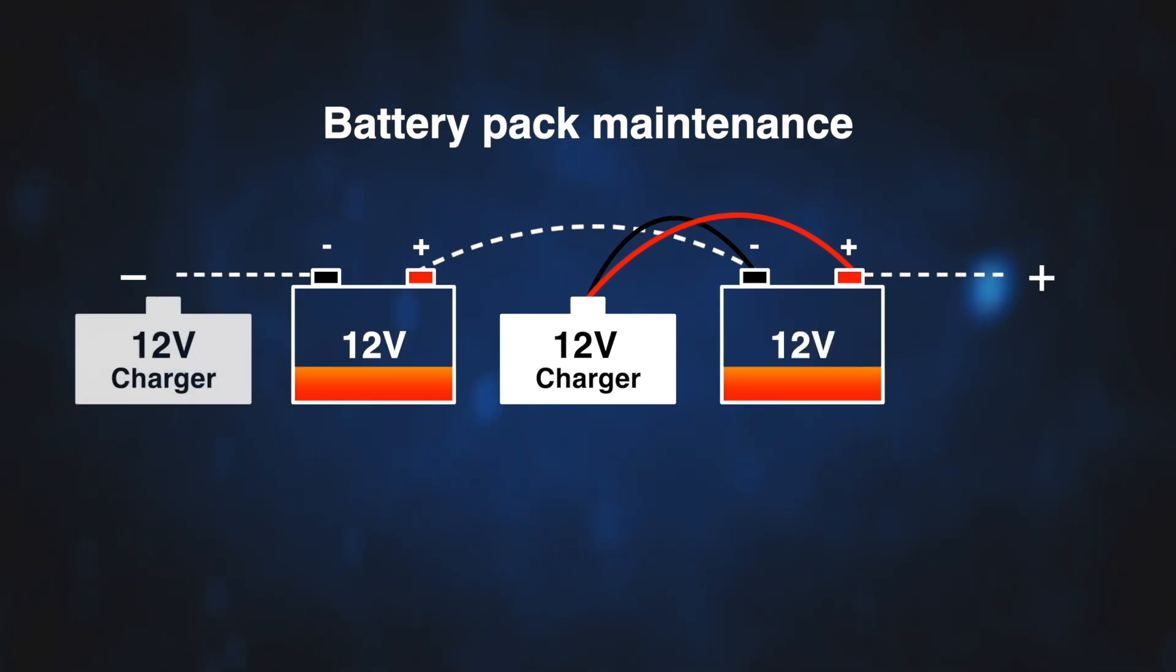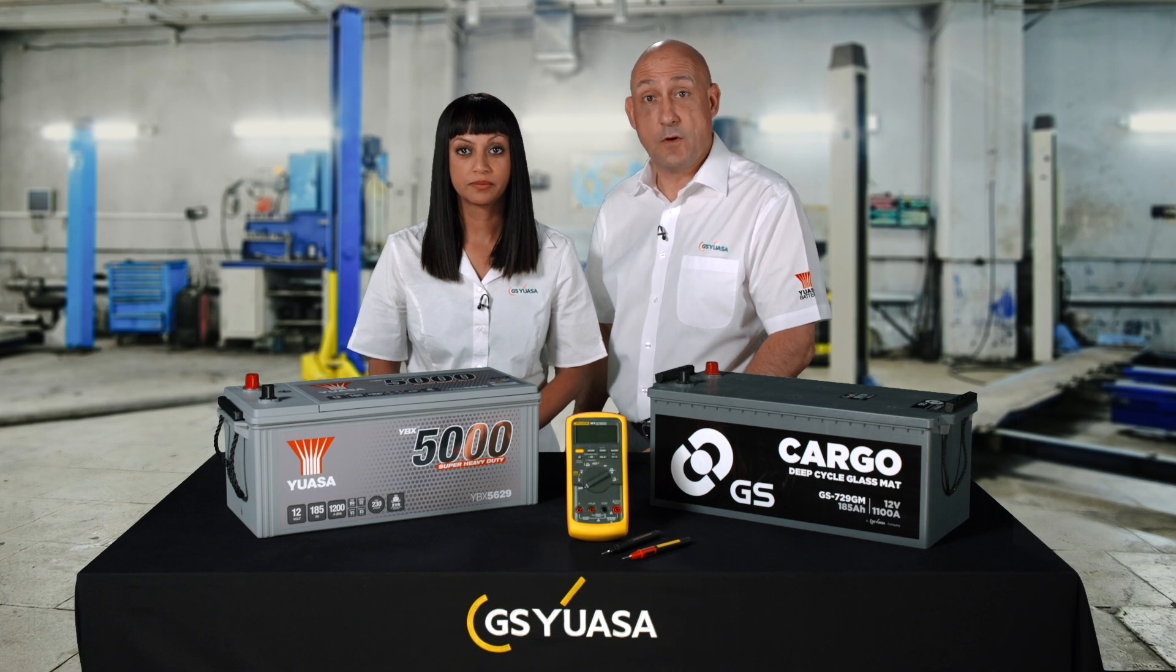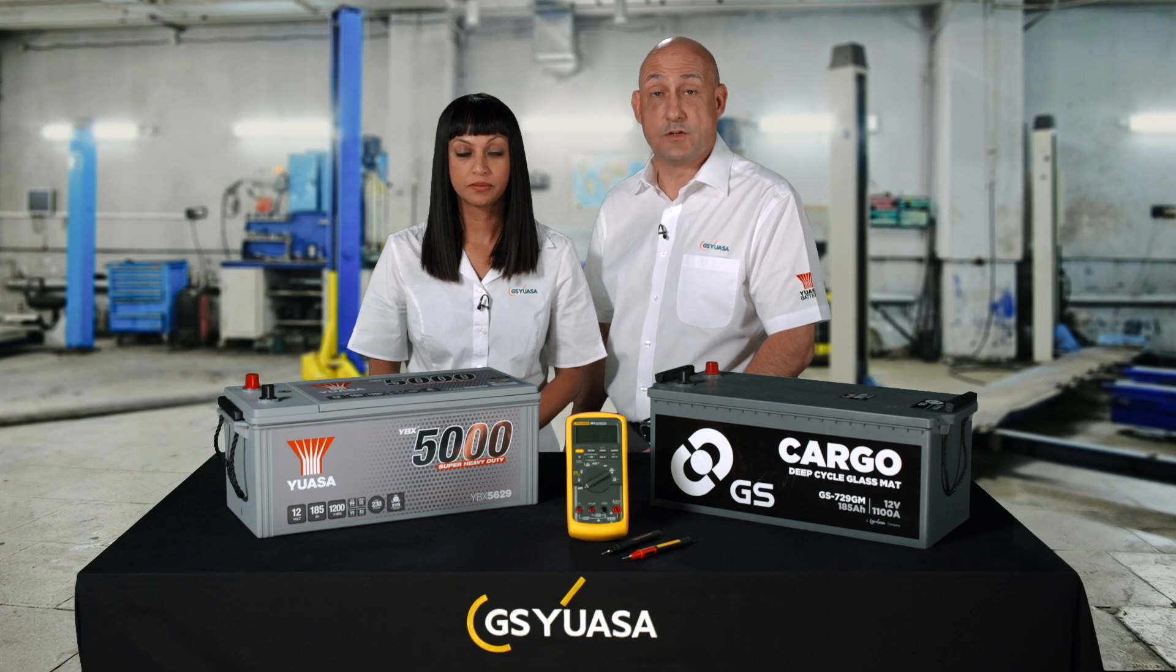Alternatively, charge each individual battery with a 12V charger. In each case, check the individual battery voltages after charging and stabilisation. Next time you charge and check the voltages, you should see the batteries are closer in voltage at the end of the charge cycle.